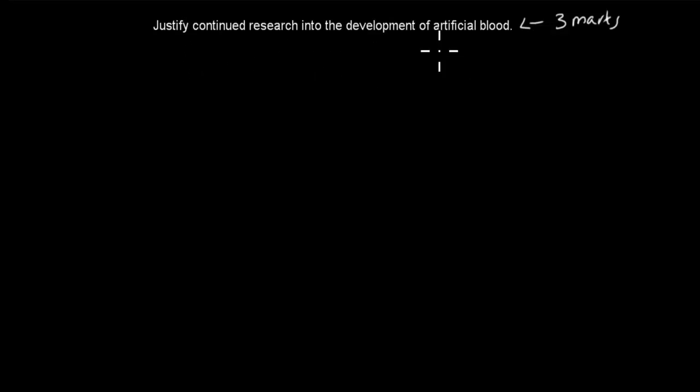I'll read the actual question. Once I've read the question, you get about five seconds to pause the video. Once you've paused the video, attempt the question, and then press play when you're ready, and I'll go over the actual answer itself. So the question is, justify continued research into the development of artificial blood, and that's worth three marks. Just pause the video and attempt the question.